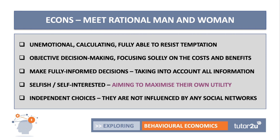They don't necessarily choose the thing that gives them immediate satisfaction — they can think into the future. They're objective rather than subjective. They focus on costs and benefits, and don't bring anything else into the decision calculus. They make fully informed decisions taking into account all the information. And often we assume they're selfish and self-interested — they aim to maximise their own utility and not that of others within a group or social network. Crucially, they're independent in making choices, not influenced or shaped in any way by social networks.